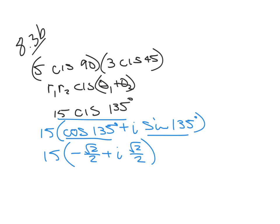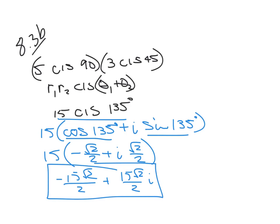Now we distribute: negative 15 square root of 2 over 2 plus 15 square root of 2 over 2 i. We cannot reduce this at all, there's nothing we can cancel. That ends up being our answer, and notice it is in rectangular form, the x plus yi form.